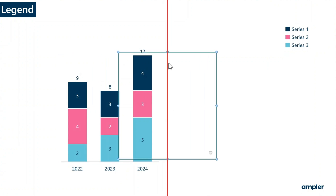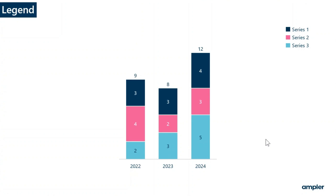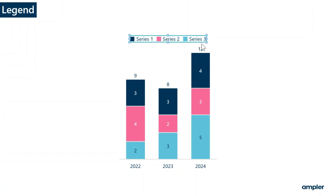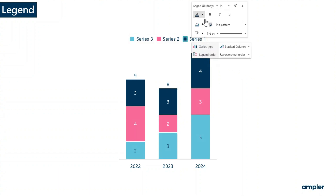When you move the chart, the legend stays in the position. The legend can be resized by dragging the handles of the outer frame. When the outline frame is selected, the format menu is shown. From the format menu, you can change the formatting and the legend order.